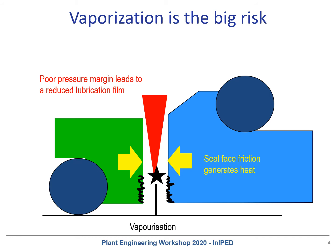Poor vapor pressure margins lead to a reduced lubrication film stiffness. Thus, the point of vaporization is moving, and depending on where it is finally located, it results in liquid lubrication, mixed fluid lubrication, or dry running, which destroys the mechanical seal faces by excessive wear or chipping.